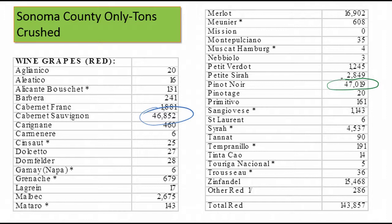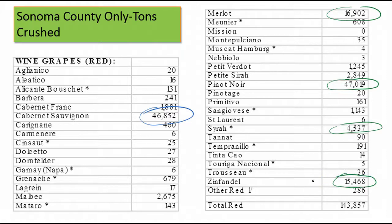Then you look at Merlot, of course still big. Zinfandel is fourth place at 15,000 tons, and Syrah comes in fifth place. So in Sonoma County: Pinot Noir, Cab, Merlot, Zin, and then Syrah. You can get a lot more detail out of the Crush Report.